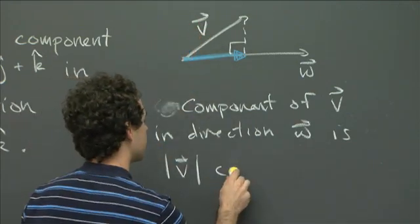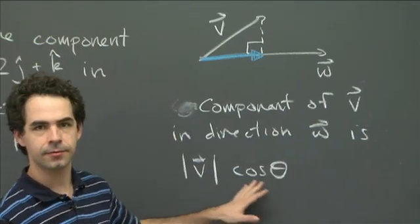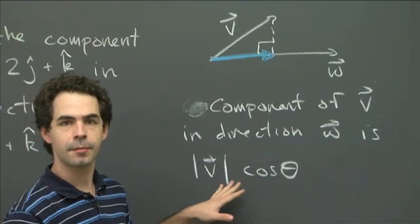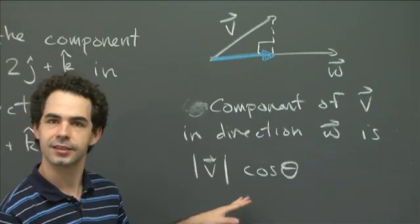So it's times cosine of theta. Now, this length of v times cosine theta, this should remind you of something. This looks very much like this formula we have for the dot product, right?